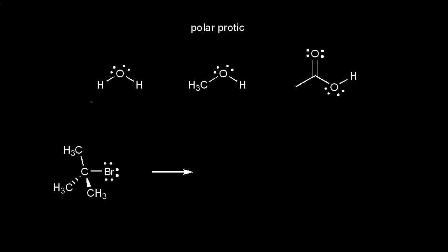The choice of a solvent can have an effect on an SN1 or an SN2 mechanism. Let's start with polar protic solvents. A polar protic solvent is a solvent that has at least one hydrogen connected to an electronegative atom. For example, if we look at water here, we can see we have a hydrogen directly connected to an electronegative atom, which is oxygen. So water is an example of a polar protic solvent.